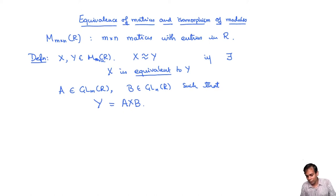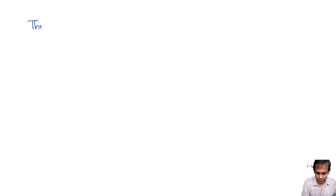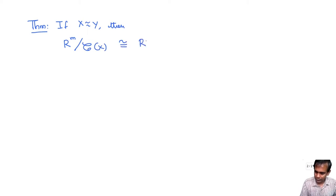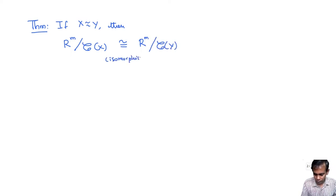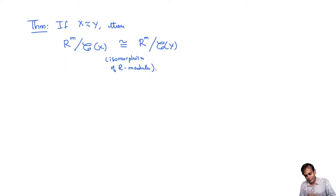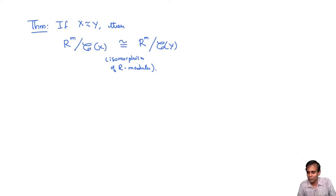The relevance of equivalence of matrices to the study of modules comes from the following theorem. If X is equivalent to Y, then you can look at the module R^M mod the column space of X — this is going to be isomorphic to R^N mod the column space of Y, as an isomorphism of R-modules.